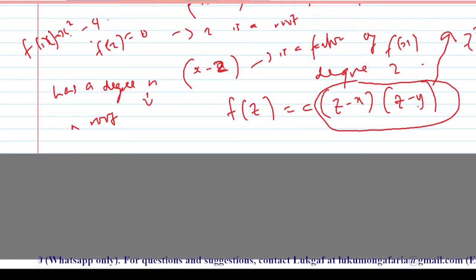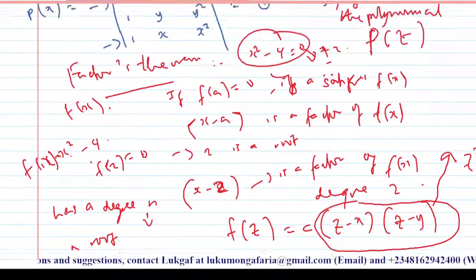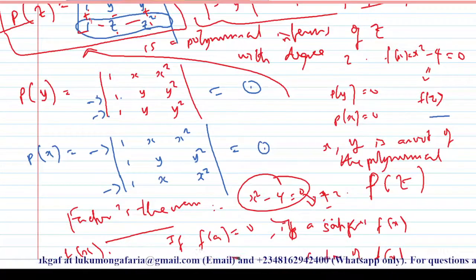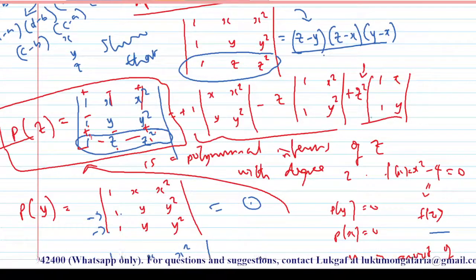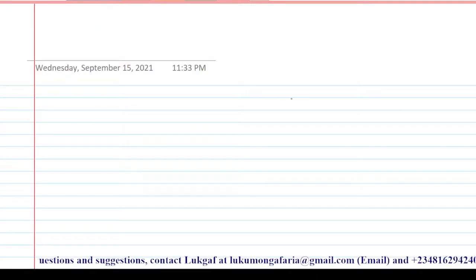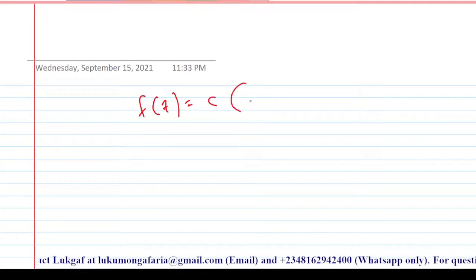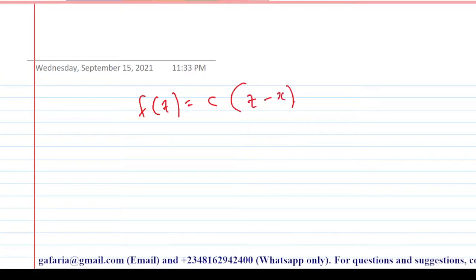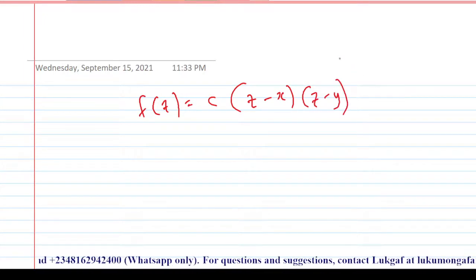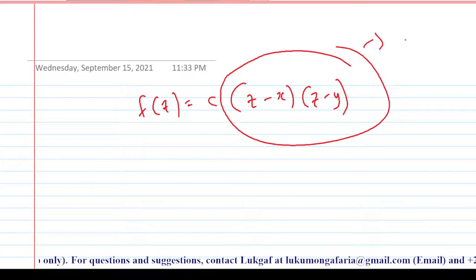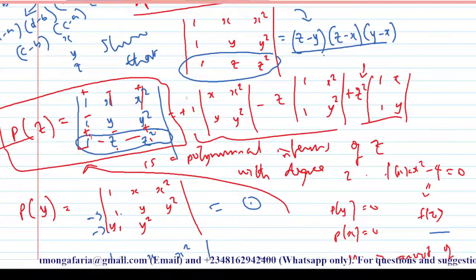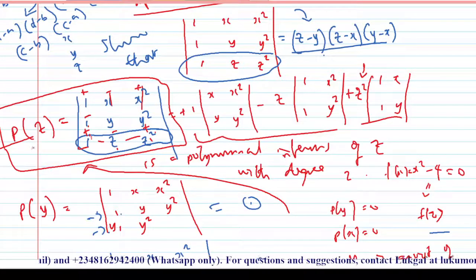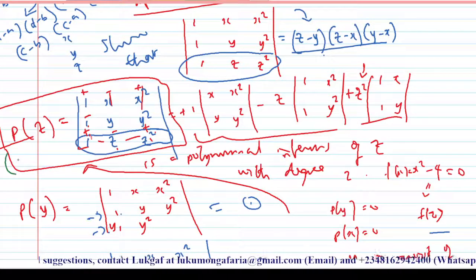We can conclude that (z minus x)(z minus y) is a factor, and according to the factor theorem there exists a constant c — which does not depend on z but can depend on x or y — such that p(z) = c(z minus x)(z minus y). The product of these two linear factors gives a polynomial of degree 2 in z.